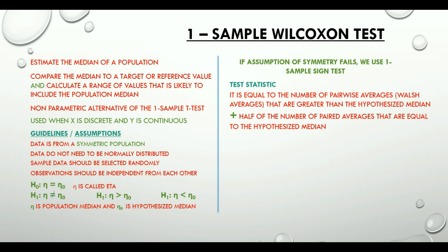Moving on to the rejection criteria: this is based on the comparison between the test statistic and a critical value that is calculated from a statistical table using the significance level alpha and the number of observations. If the test statistic is greater than the critical value, then we reject the null hypothesis.